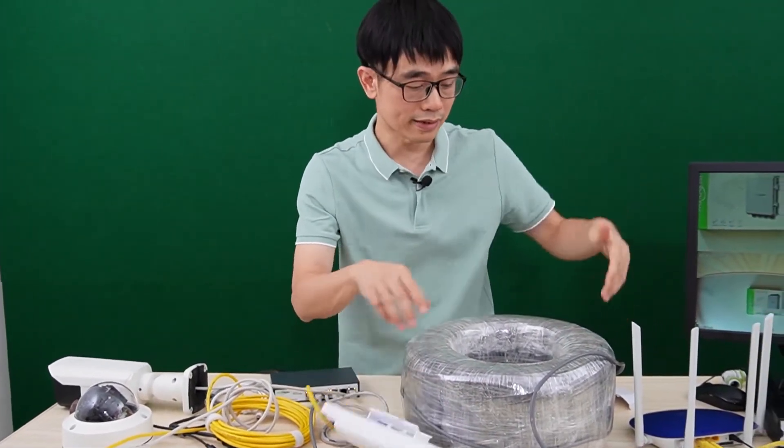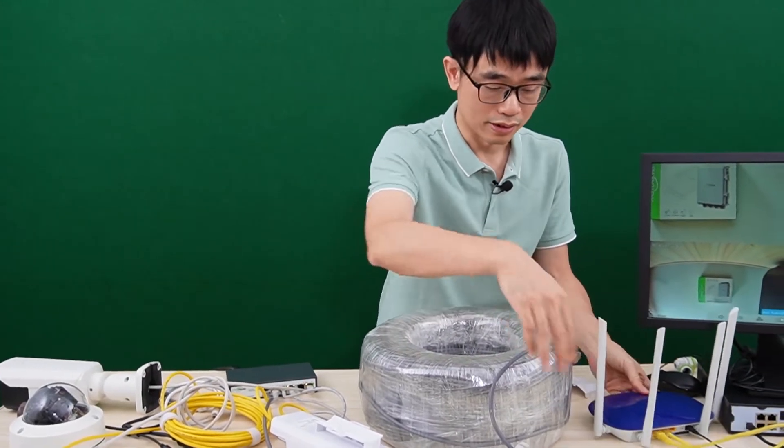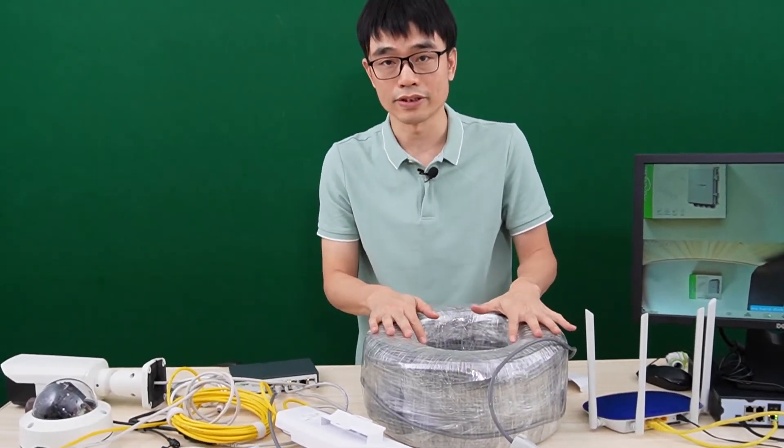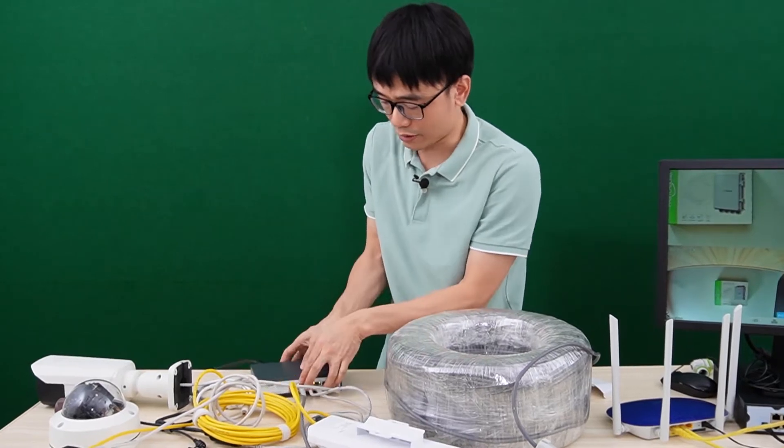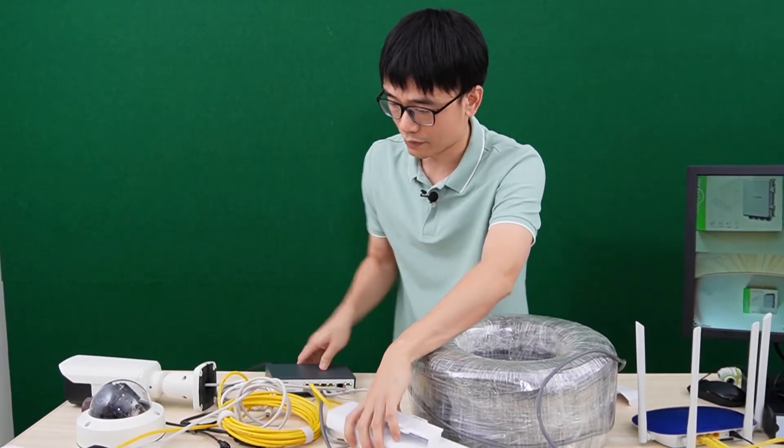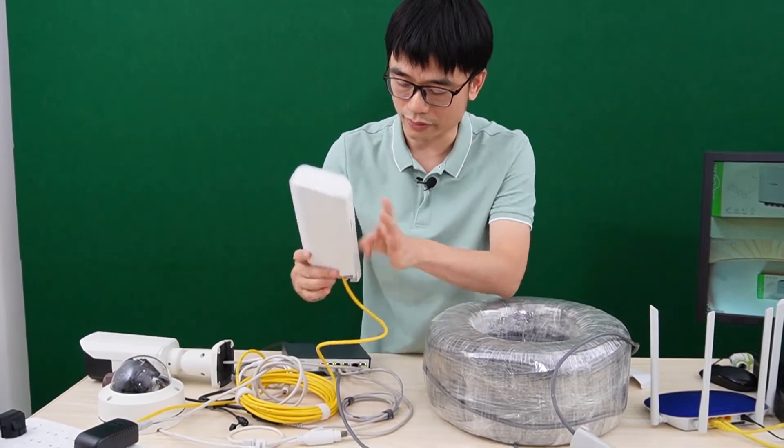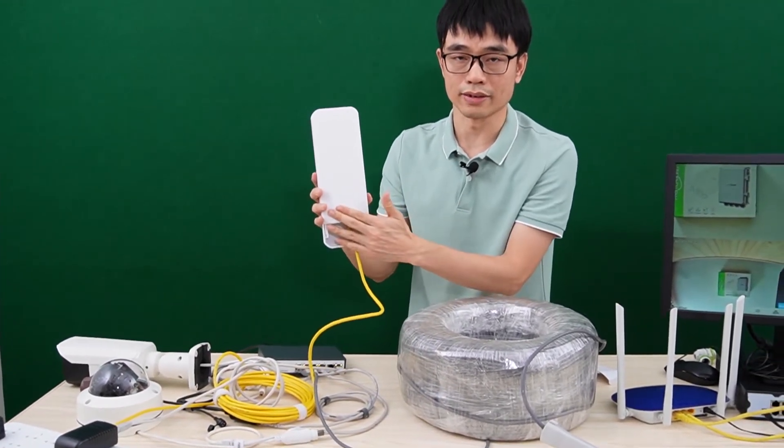You can see the data, Ethernet access is coming from this router, going through this long-run 1000-feet ethernet cable, and landing to this long-run PoE switch. Now it's supplying through this power injector to the access point.